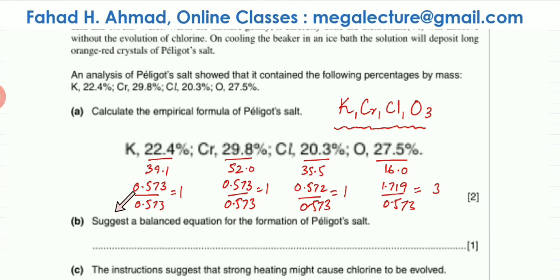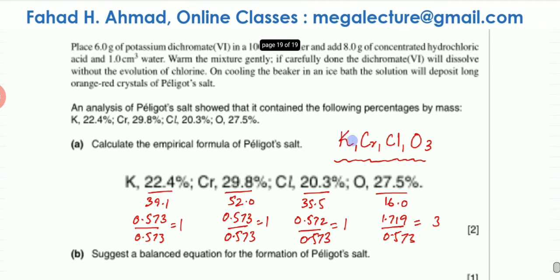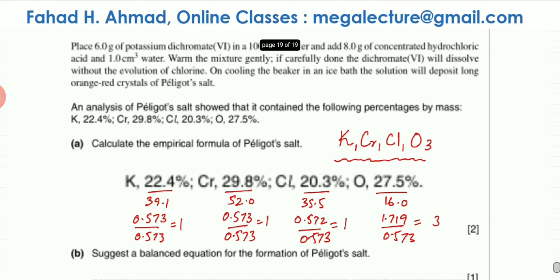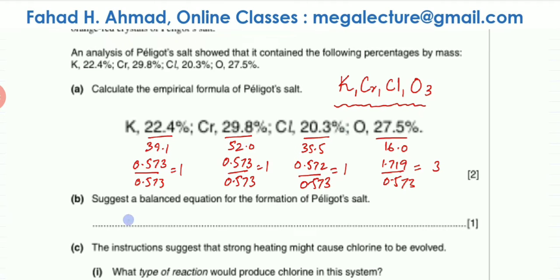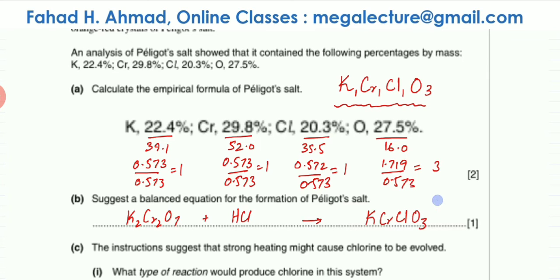Part b asks us to suggest a balanced equation for the formation of Péligot's salt. Looking at what was happening: one reactant was potassium dichromate(VI) reacting with concentrated hydrochloric acid HCl. So we write K₂Cr₂O₇ and HCl as reactants, forming Péligot's salt which is KCrClO₃.